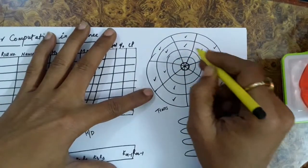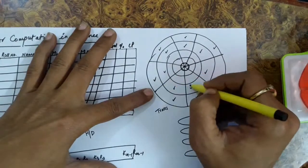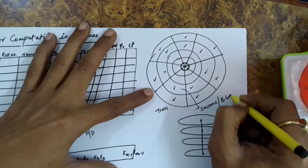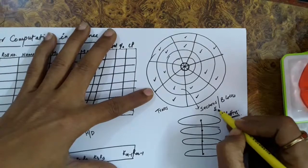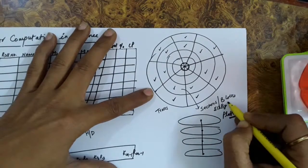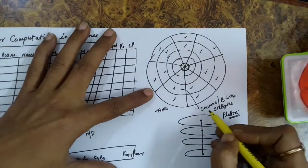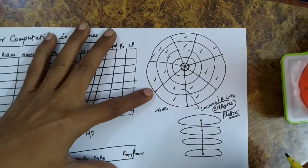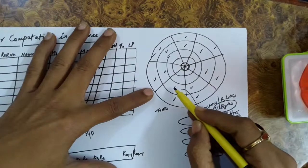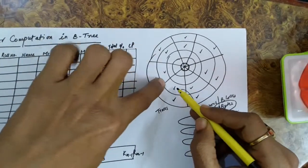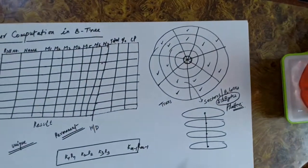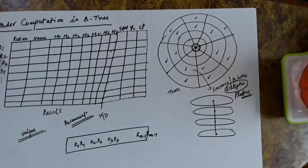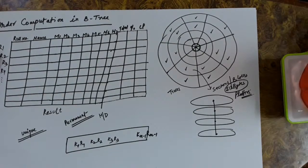On every track, smaller parts are created. These are called sectors or blocks, and these blocks are usually of size 512 bytes. These sectors are the basic blocks of storage, meaning every data has to be fitted into these 512-byte blocks. So every B-tree node is going to be adjusted in a 512-byte block.